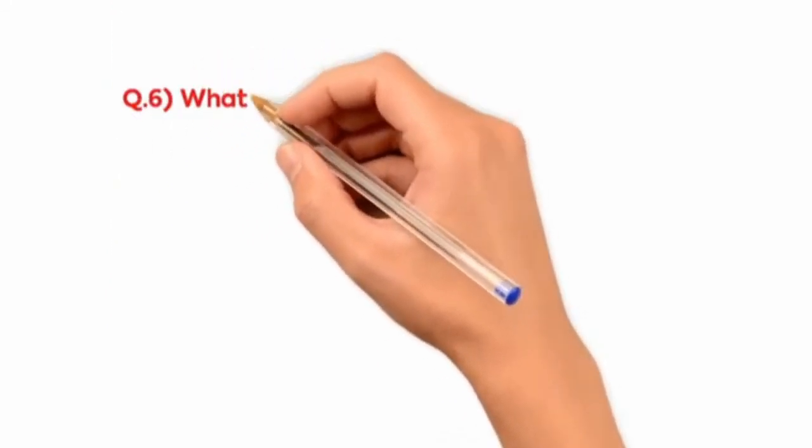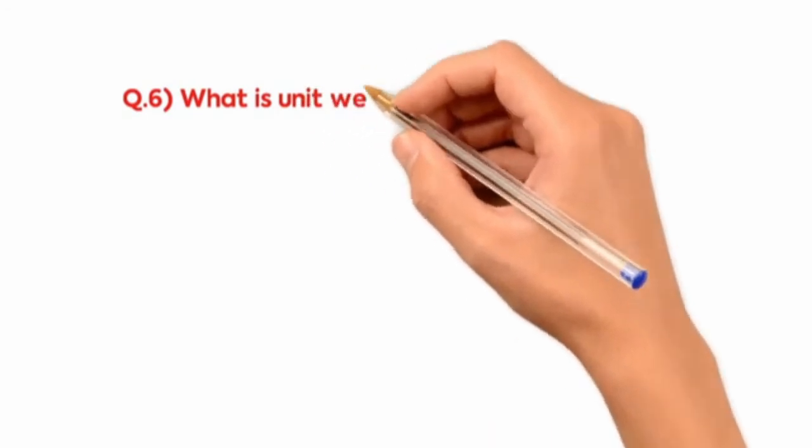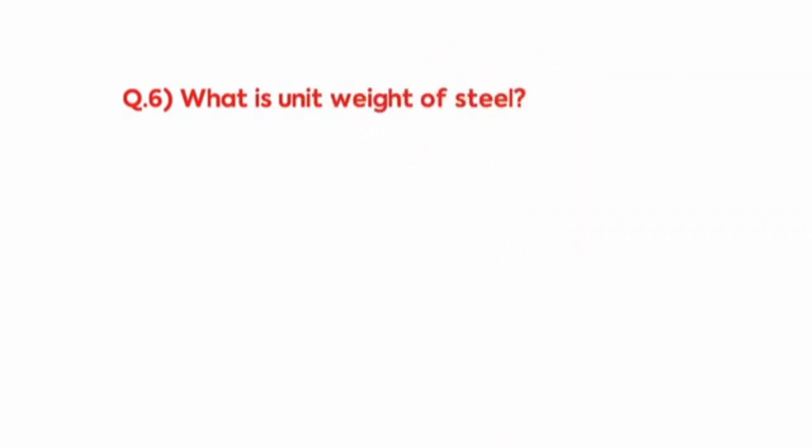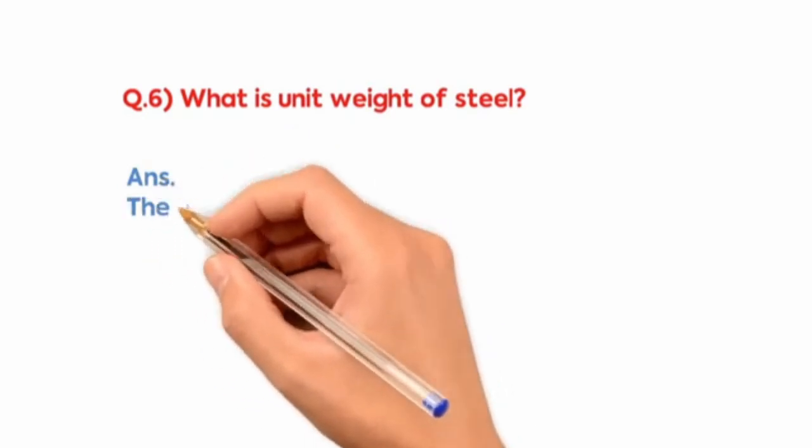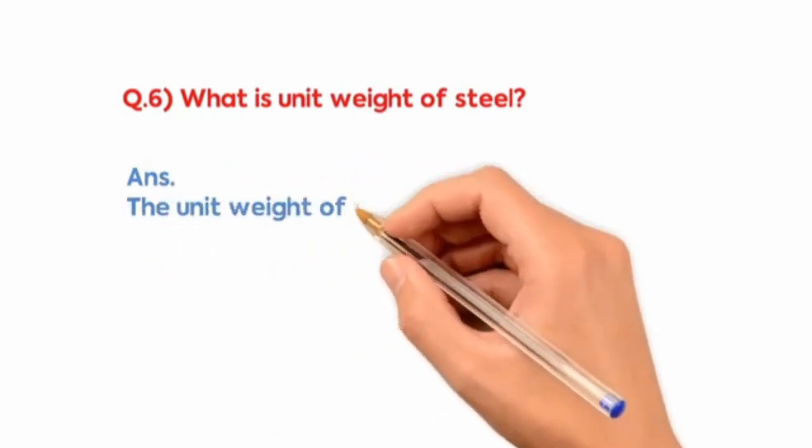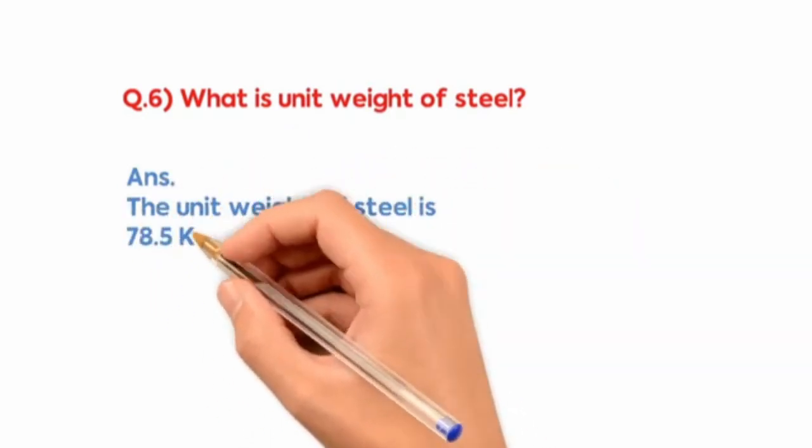What is unit weight of steel? The unit weight of steel is 78.5 kN per meter cube.